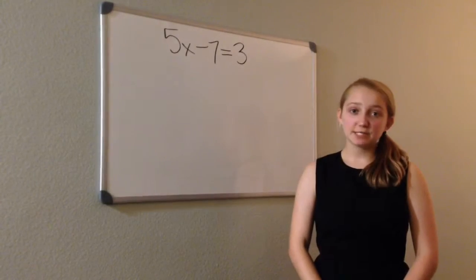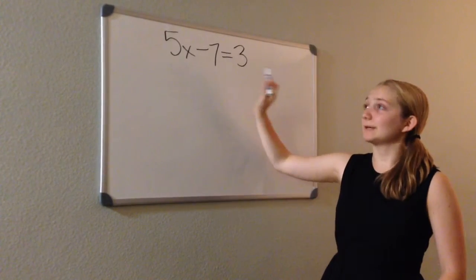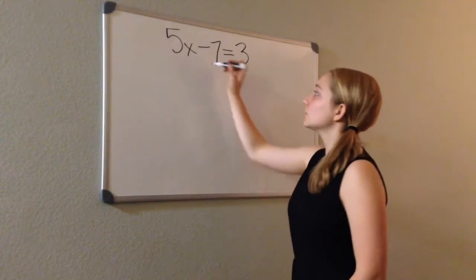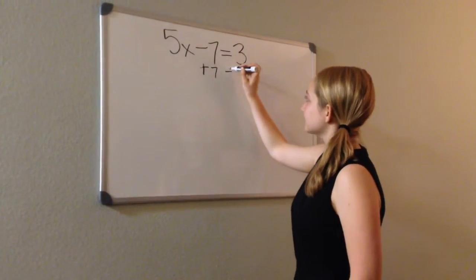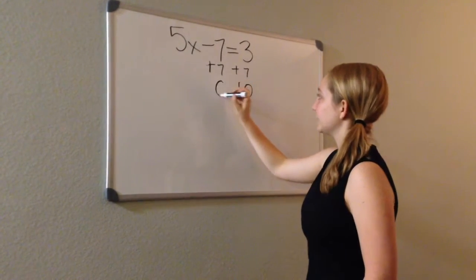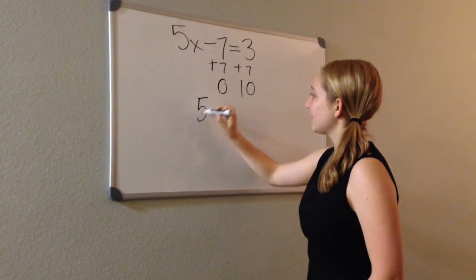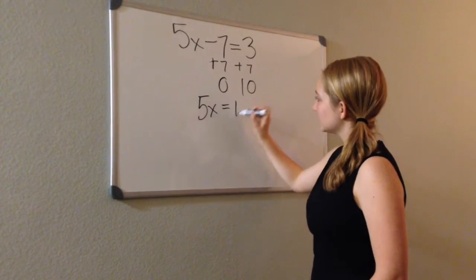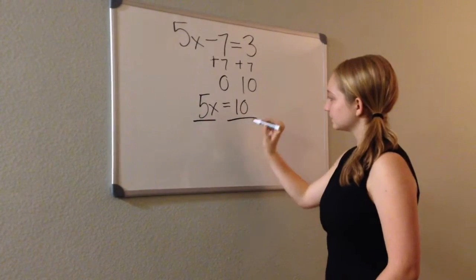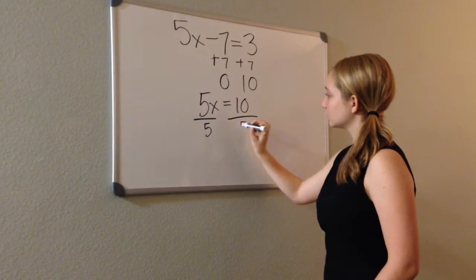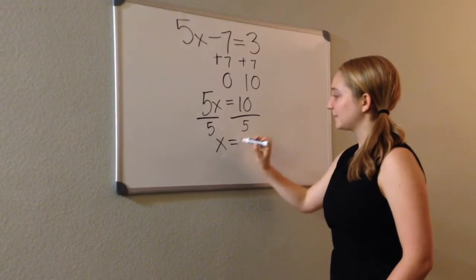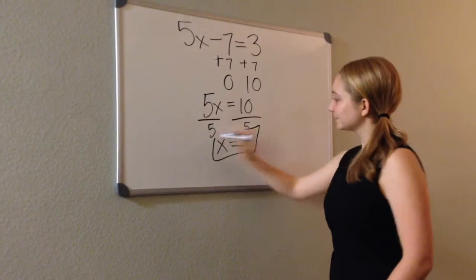You solve equations by undoing things and doing to one side what you do to the other side. To start off, let's isolate X. So we'll add 7 to each side. 3 plus 7 is 10, and negative 7 plus 10 is 0. So now we have 5X equals 10. Now, to get X by itself, let's divide by 5. 5X divided by 5 is X, and 10 divided by 5 is 2. Therefore, X is 2.